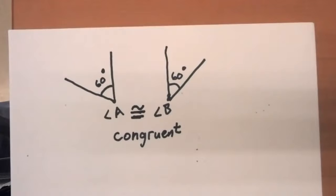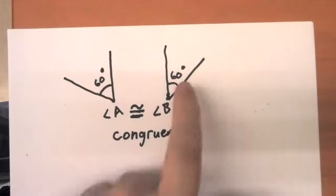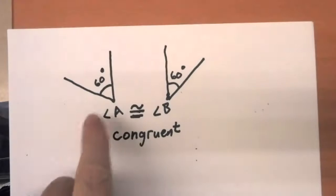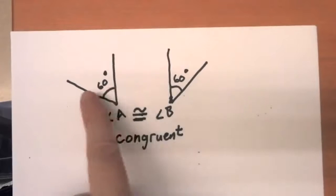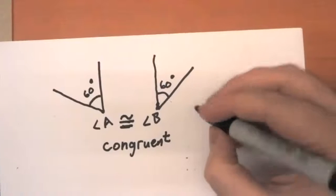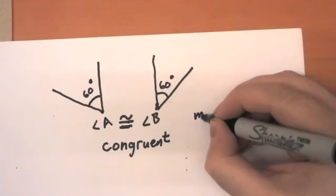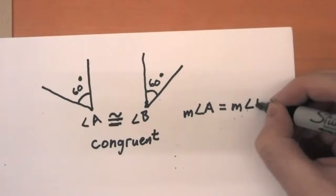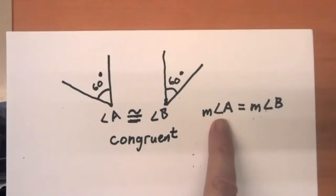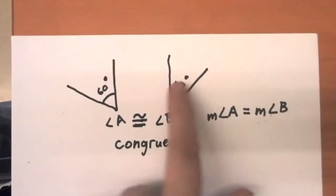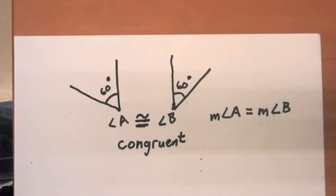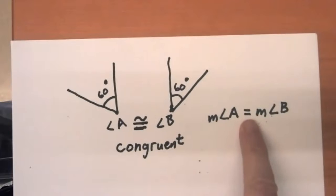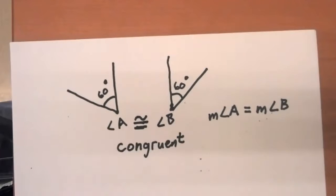I want to be clear about the difference between congruence and equality. Geometric objects like these two angles are going to be congruent to each other. If I wanted to say that this 60 is equal to this 60 — these two numbers are equal to each other — the way I might write that is to say that the measure of angle A is equal to the measure of angle B. This M in front of the angle sign means measure. So the measure of angle A is 60 degrees, the measure of angle B is 60 degrees. Those are numbers, so I can compare two numbers with the equality sign. But geometric objects like angles should be congruent to each other.